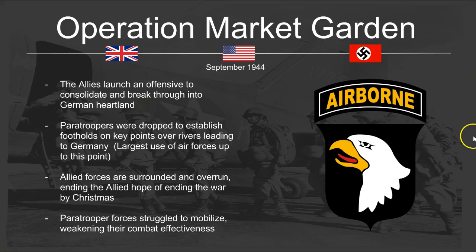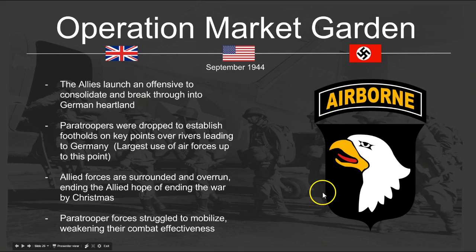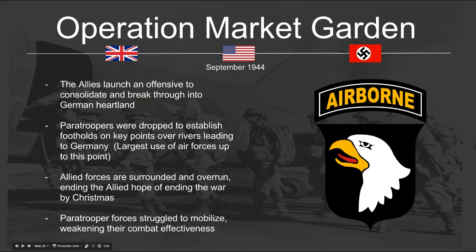Operation Market Garden came in September of 1944. The Allies had established a foothold in Europe, working their way across France. They launched an offensive to consolidate and break through into German heartland, up by the Rhine River. Paratroopers were dropped to establish footholds on key bridges and towns — easily fortified positions to build up arms for an assault into Germany. However, Allied forces were surrounded and overrun, ending the hope of finishing the war by Christmas. Paratrooper forces struggled to mobilize, find equipment, and meet up with artillery divisions — leaving them killed, pulled out, or missing.